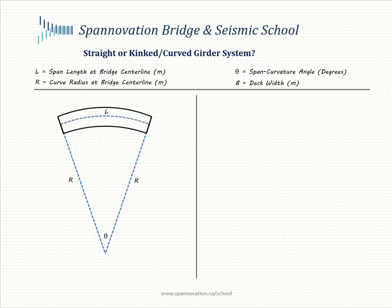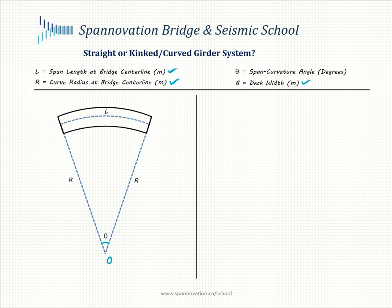This tutorial provides quantitative guidance on when to select straight girders or resort to kinked or curved girders when dealing with a curved bridge span. We have a curved bridge span with arc length L, radius R, and a uniform deck width B — all in meters. This bridge span subtends an angle theta at the center of the radius, point O.